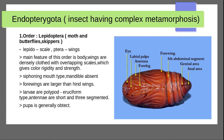The mouth type is siphoning; mandibles are absent. forewings are larger than hindwings. Larvae are polypod eruciform — eruciform means soft, cylindrical body with a distinct head. Antennae are short and three-segmented. Two pairs of eyes are generally present.